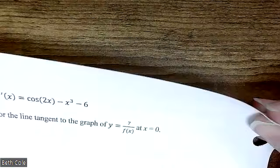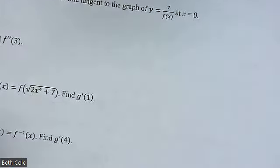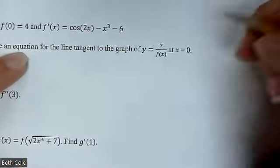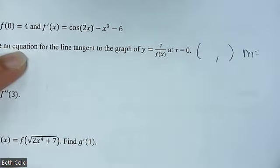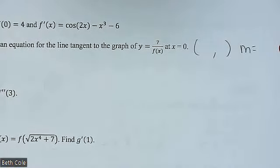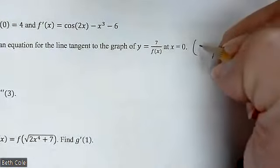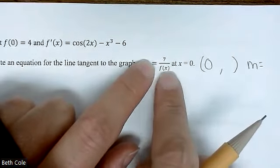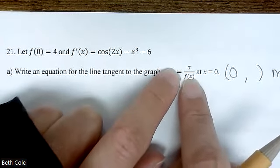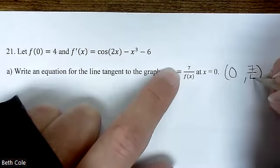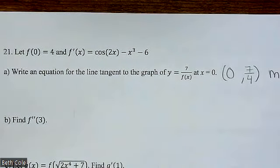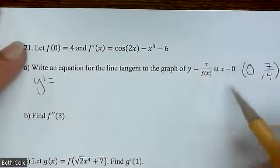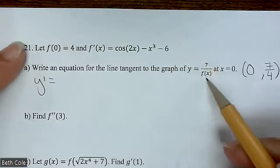We have until 11 — I can get this all done in 20 minutes. Letter A: write an equation. You need two things — a point and a slope. What are we plugging in for x? Zero. They actually tell you what F of zero is in the given part — F of zero is 4, so this would be 7 over 4. Slope comes from derivatives, so Y prime equals — what rule do you need? Quotient rule. It's going to be the denominator times the derivative of the numerator. The derivative of 7 is nothing — a constant's derivative is zero, so that whole numerator term goes away.